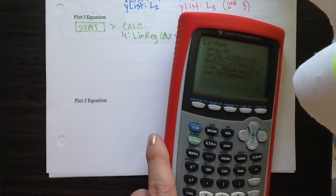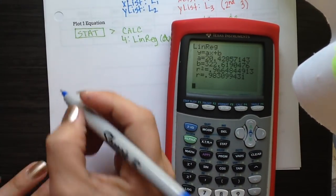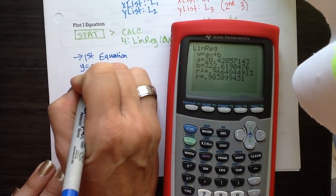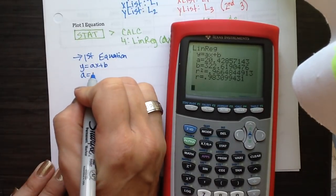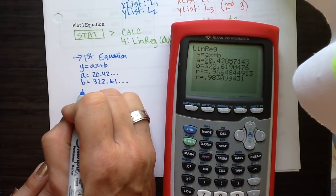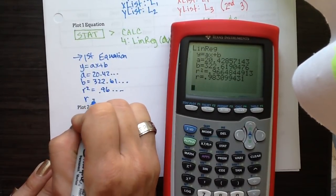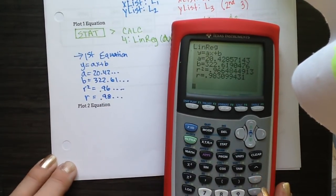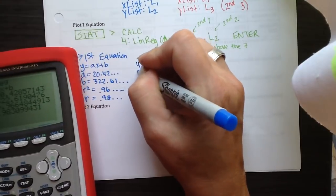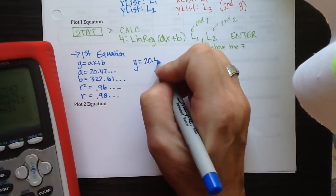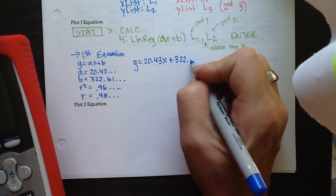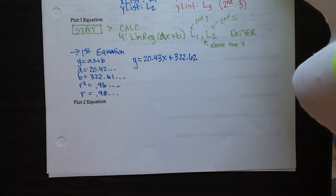That gives you the numbers to make your equation, but you still have to write it. The screen shows y = ax + b, then gives you a value of about 20.42, b of about 322.61, r² of about 0.96, and r of about 0.98. The equation only uses a and b, so rounding, we get y = 20.43x + 322.62.